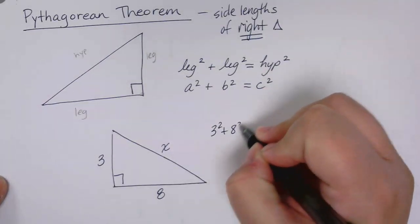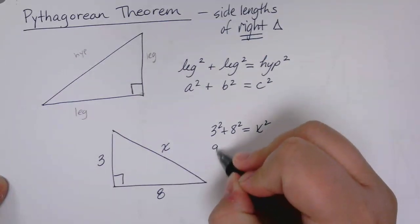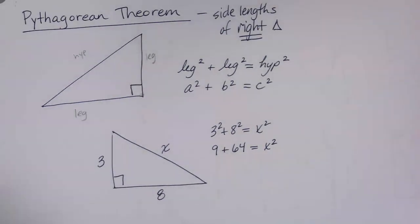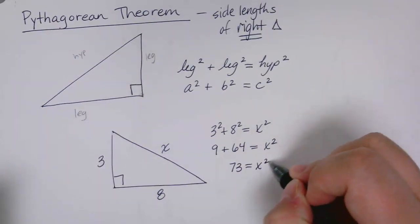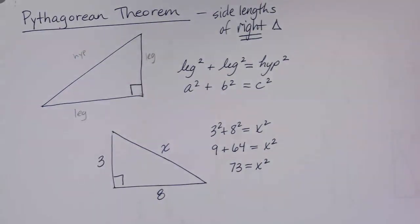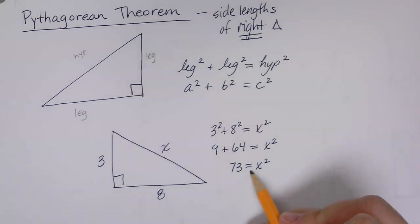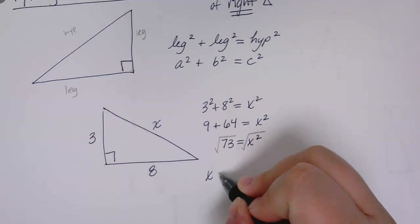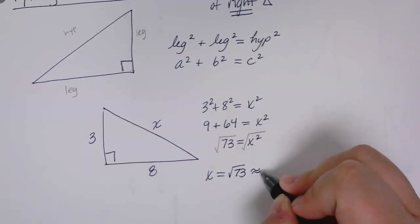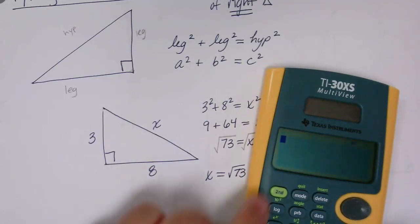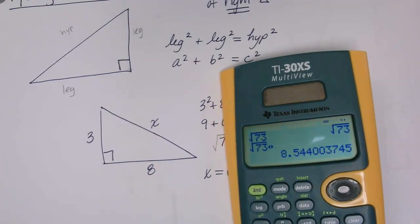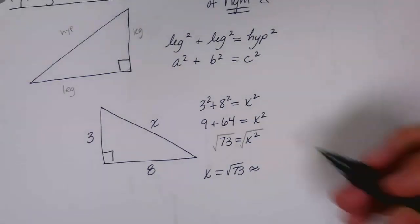So leg squared plus leg squared equals hypotenuse squared. So 3 squared is 9, 8 squared is 64, and that's equal to my hypotenuse squared. 9 plus 64 is 73, so the hypotenuse squared is 73. But we want to know the actual length of the hypotenuse, not the hypotenuse squared. So we have to unsquare it, which means take the square root of both sides. Take the square root of both sides and we get x is the square root of 73, which is approximately, let's do it, square root 73, 8.54, so approximately 8.54.